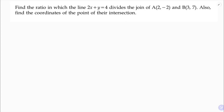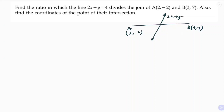Find the ratio in which the line 2x plus y equals 4 divides the join of A(2, -2) and B(3, 7). There is a line whose equation is given as 2x plus y equals 4, and this line divides A and B in some ratio that we need to find.